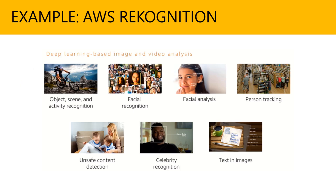Next, I want to talk about AWS Rekognition as an example. AWS Rekognition uses deep learning-based image and video analysis. For instance, you can do object, scene, and activity recognition, face recognition, analyze contours of your face for in-depth facial analysis, track individuals, detect unsafe content, celebrity recognition, and text in images. We'll be demonstrating this and showing how it connects with Python — running a Python program to manage AWS Rekognition.